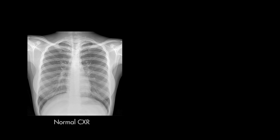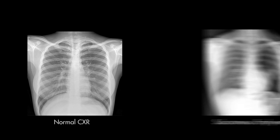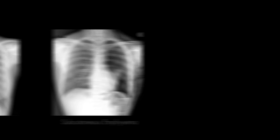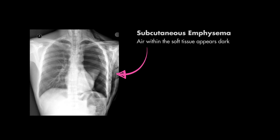Finally, don't forget about soft tissues. To illustrate how this can be abnormal, here's a normal x-ray. Now here's an x-ray with subcutaneous emphysema after a procedure. This area here is air within the soft tissue, in this case from a chest tube that was placed.